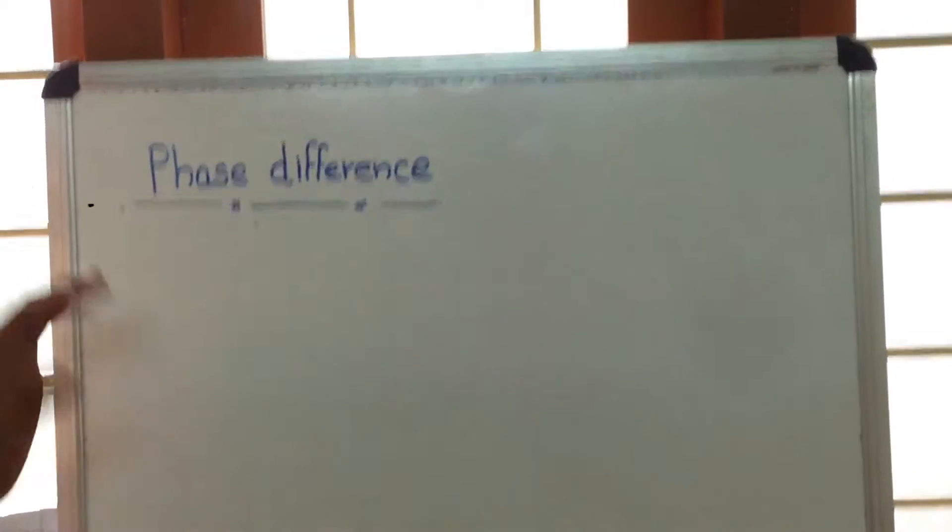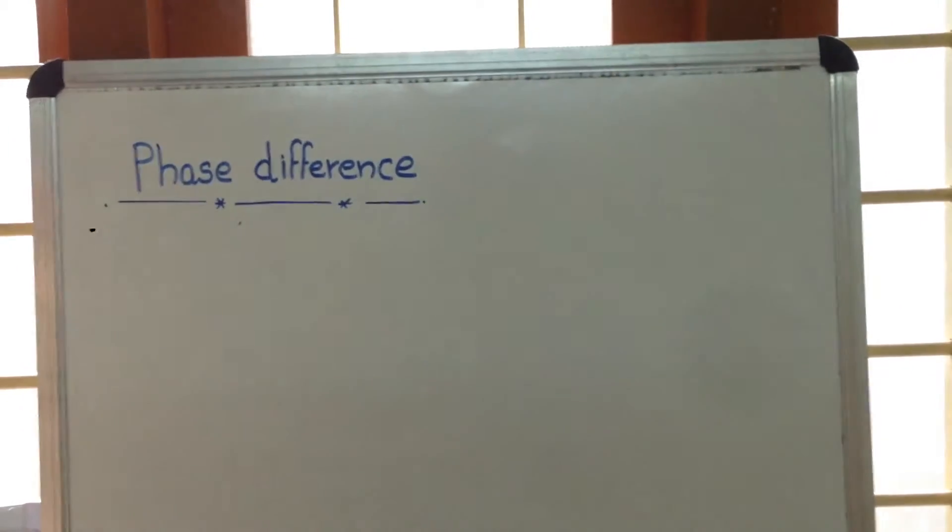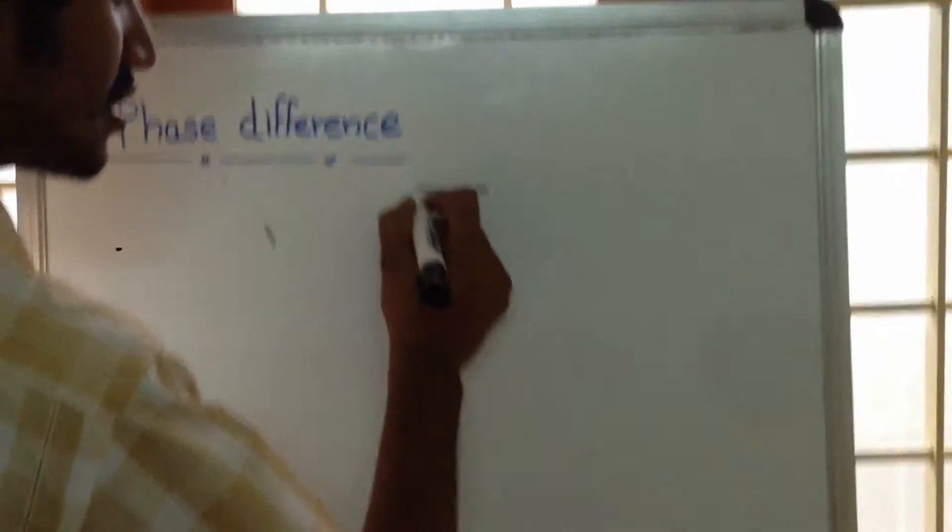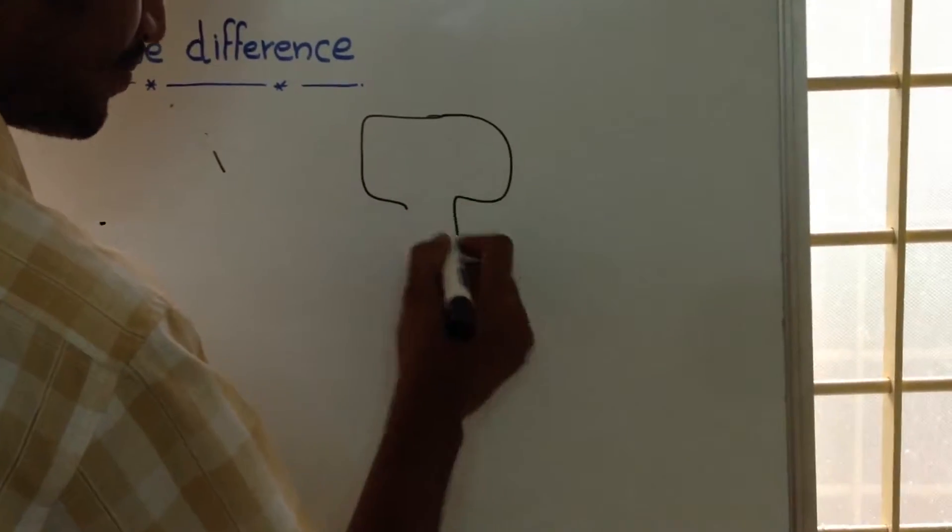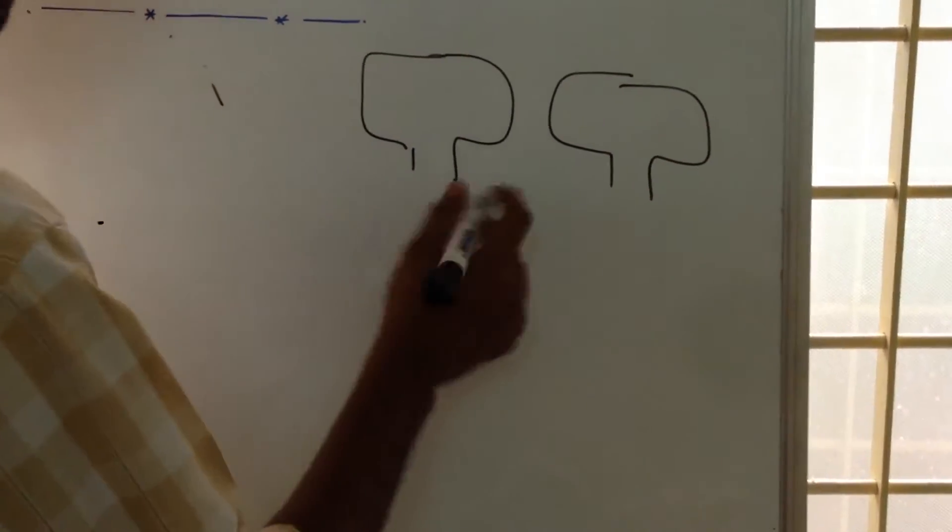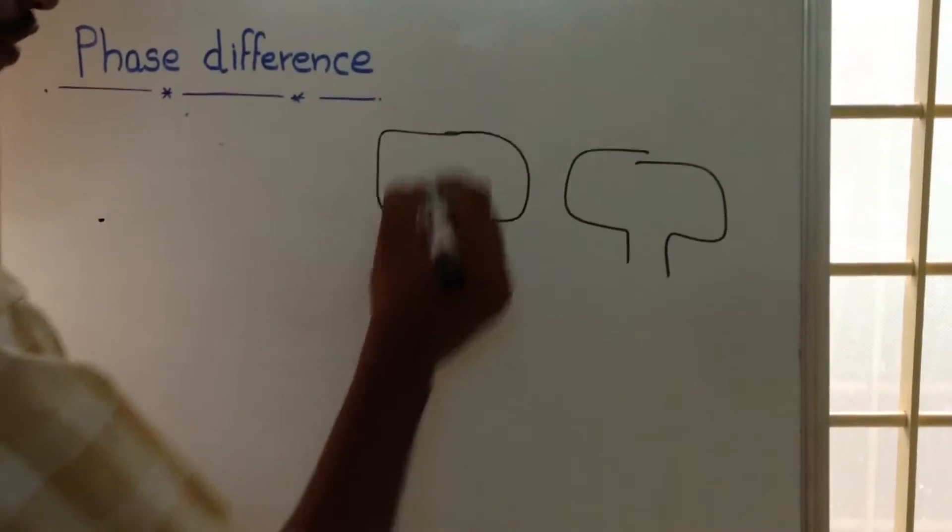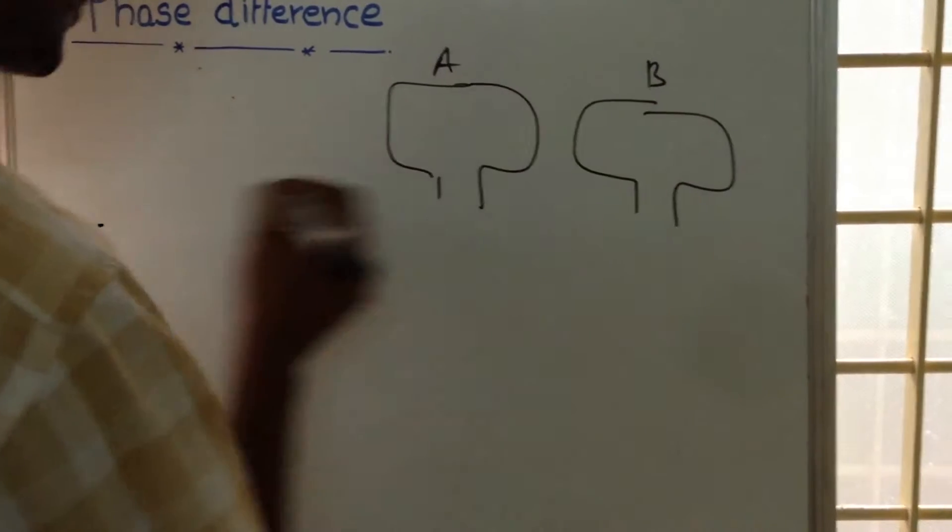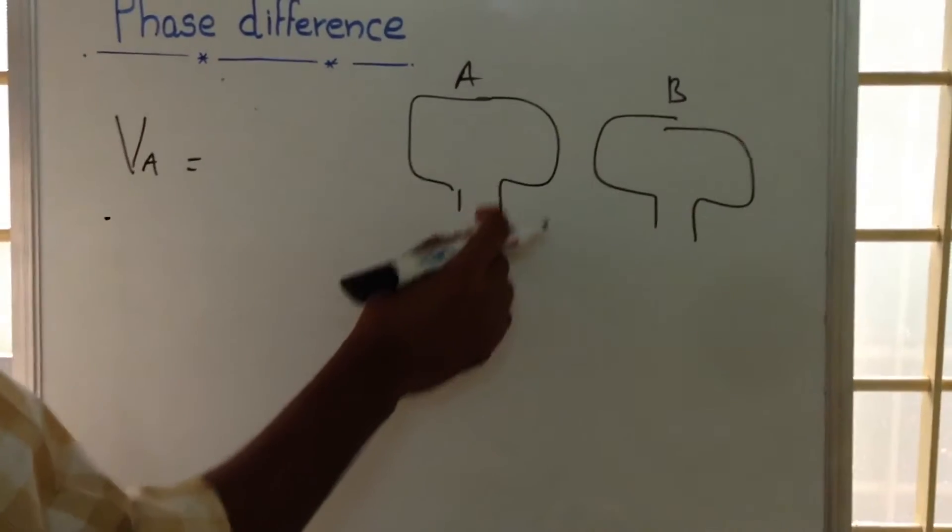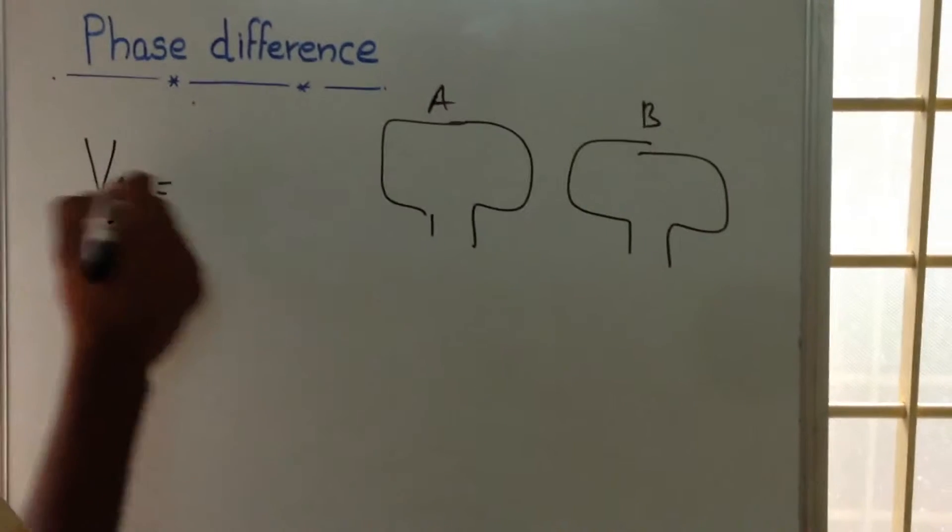In electrical technology we come across a thing called phase difference. For studying phase difference, first let us consider two circuits. In these two circuits, the voltage across the terminals - the first circuit is A and the second circuit is B - the voltage across the terminals being alternating.